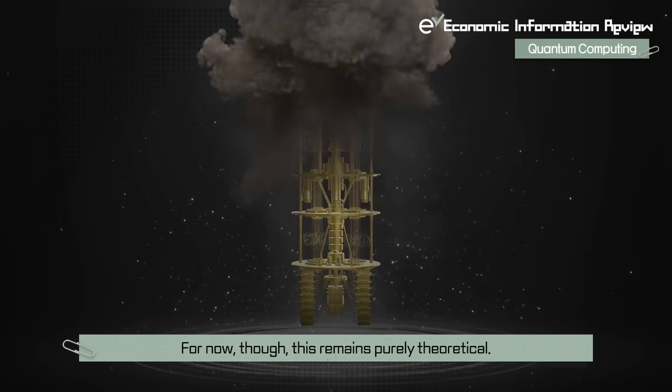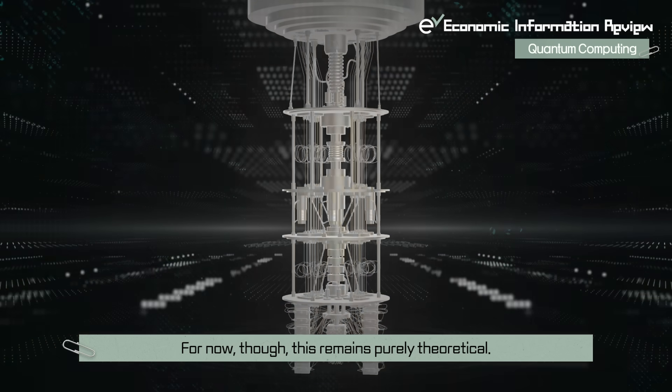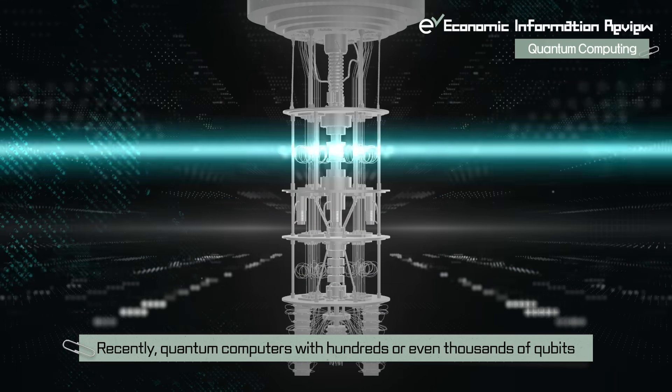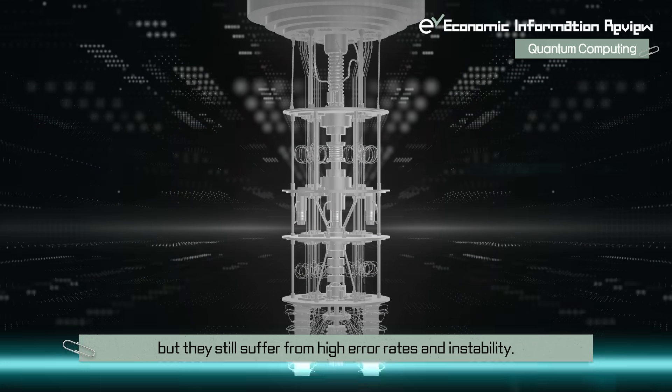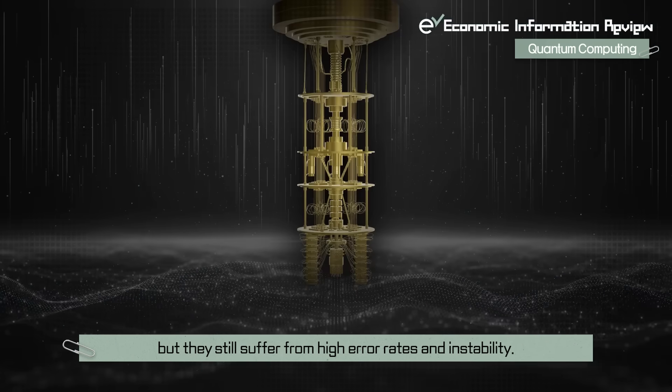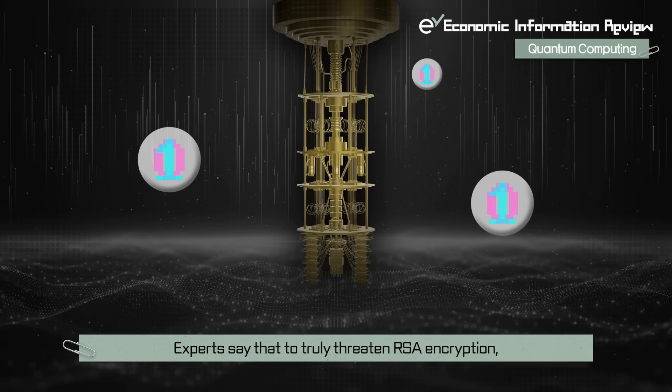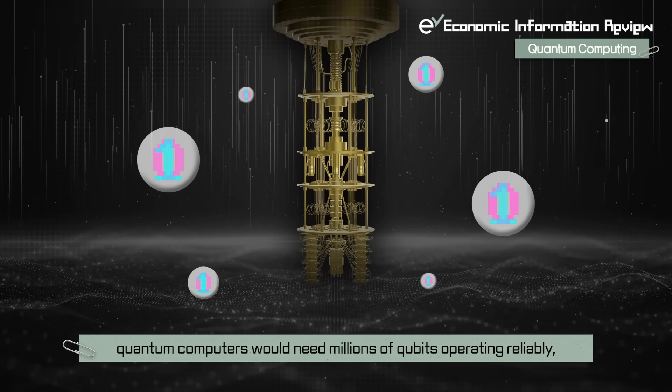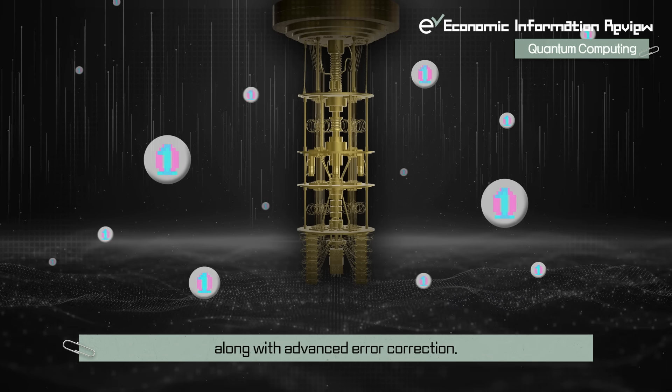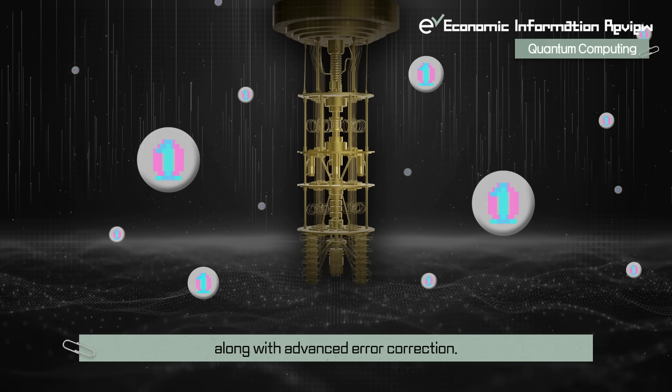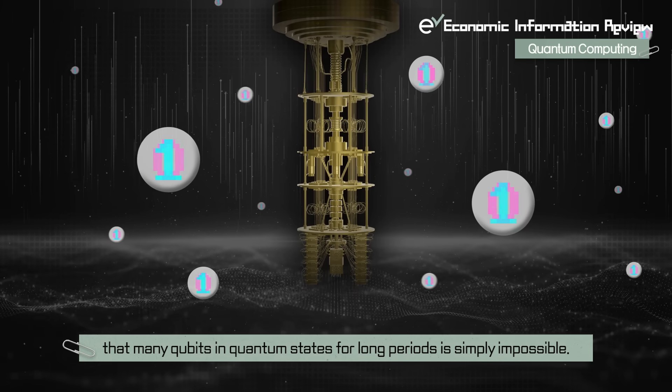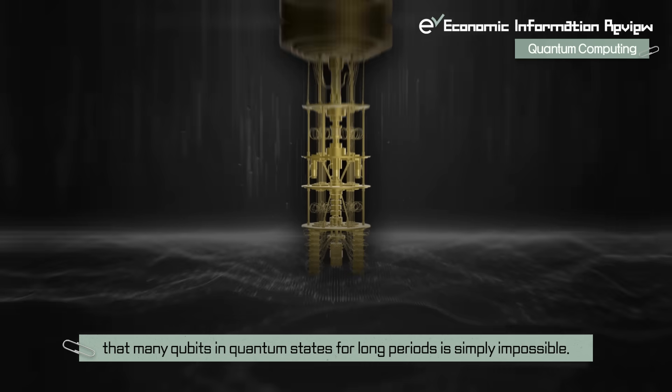For now, though, this remains purely theoretical. Recently, quantum computers with hundreds or even thousands of qubits have been developed, but they still suffer from high error rates and instability. Experts say that to truly threaten RSA encryption, quantum computers would need millions of qubits operating reliably, along with advanced error correction. With today's technology, maintaining and controlling that many qubits in quantum states for long periods is simply impossible.